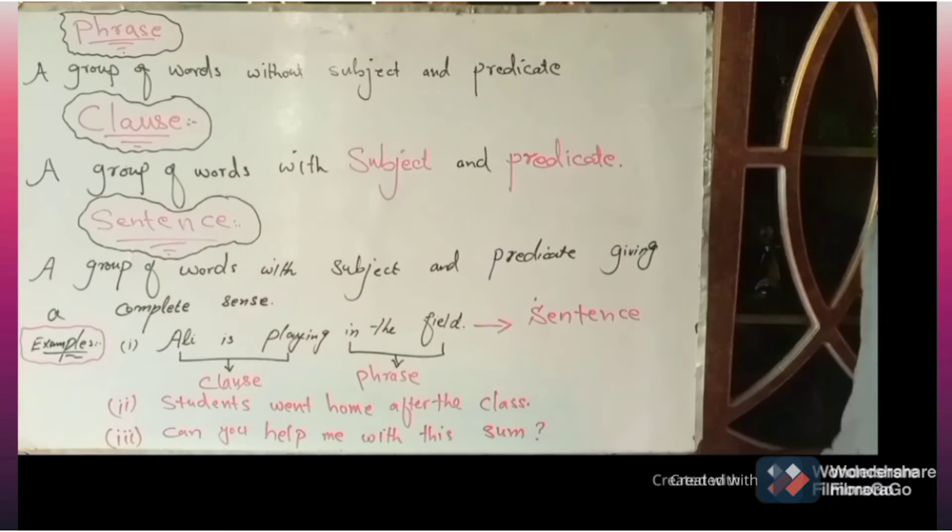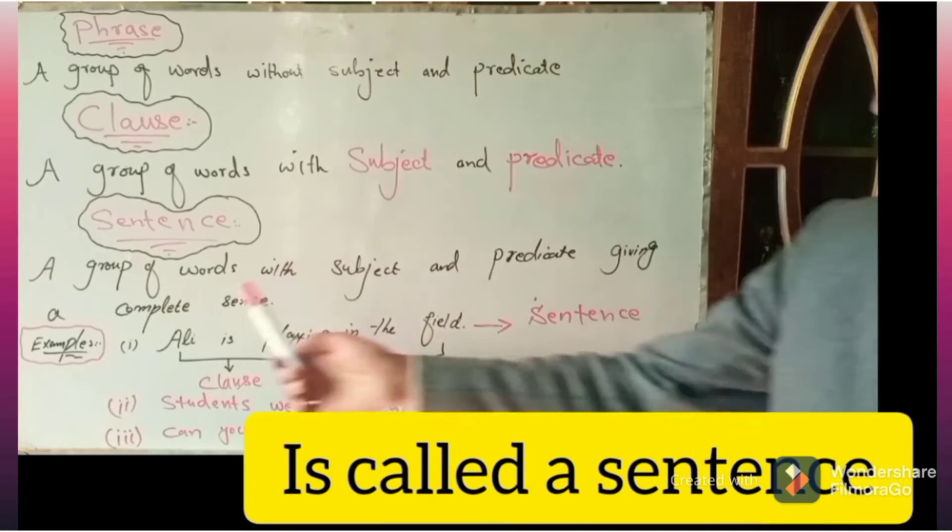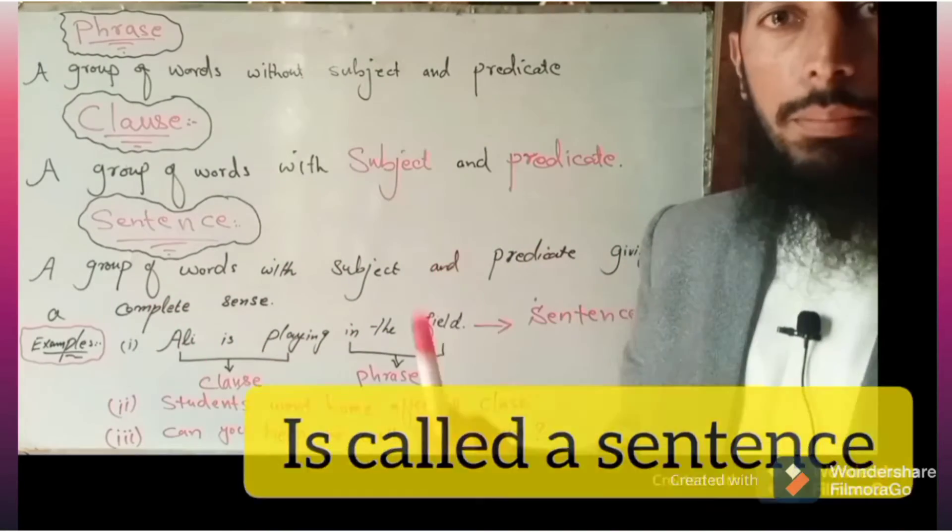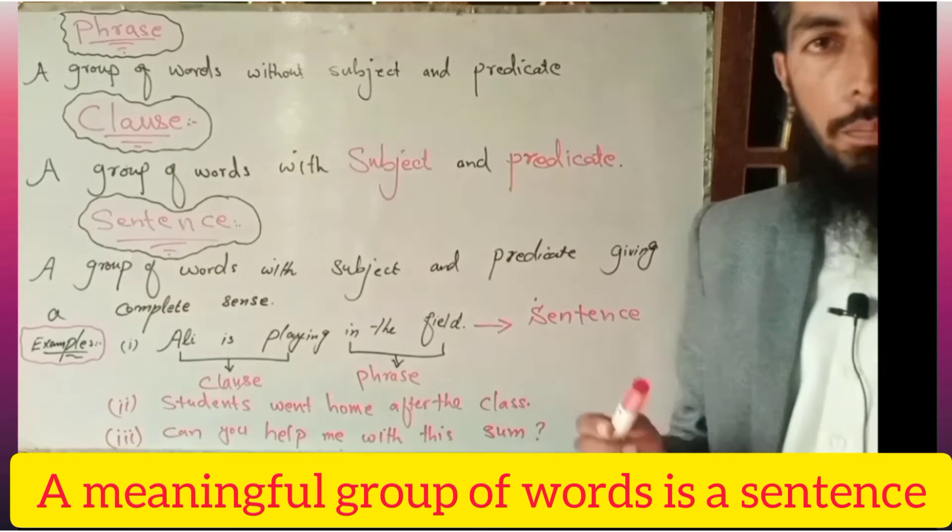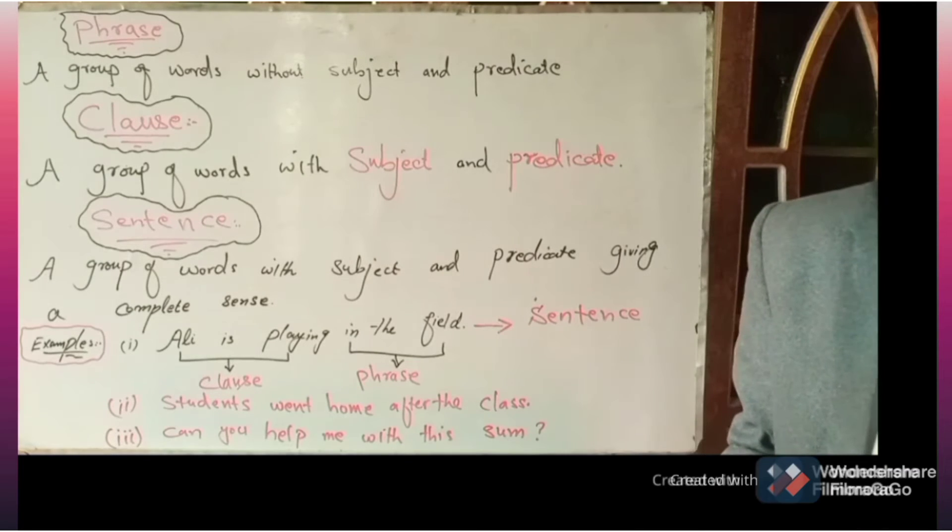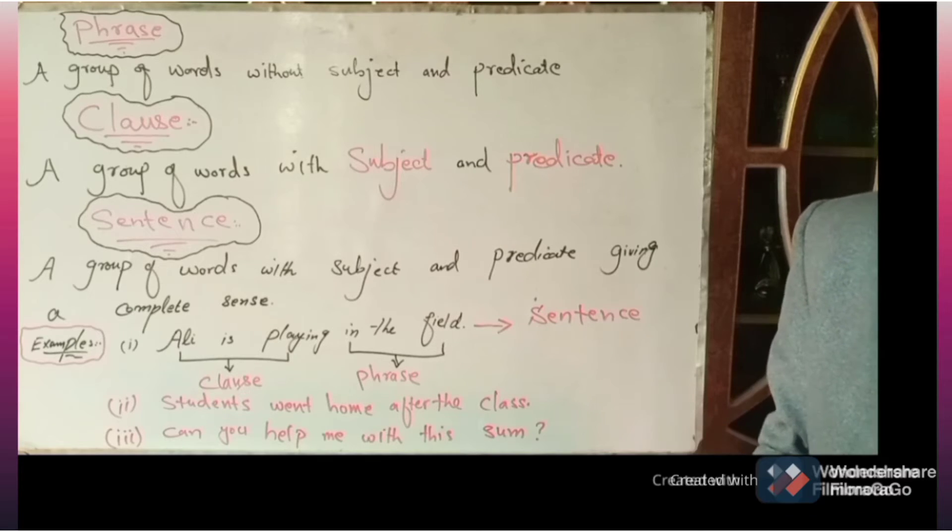Sentence. A group of words with subject and predicate giving a complete sense. A collection of words which has subject, predicate, like clause, but it gives complete sense. It gives complete meaning. Or you can say another definition. A meaningful group of words is called a sentence.